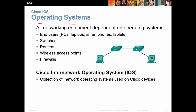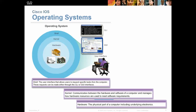With Cisco equipment, it's called the IOS. End users, PCs, laptops, smartphones, tablets — if it's some type of hardware, it has some type of operating system on it. In the Cisco world, we talk about routers, switches, wireless access points, and firewalls. The Cisco Inter-Network Operating System, or IOS, is a collection of operating systems used on those devices.